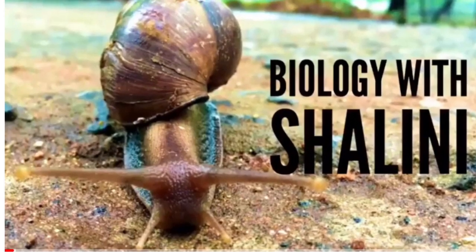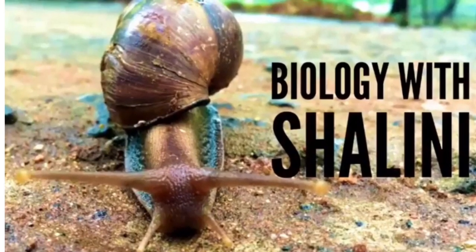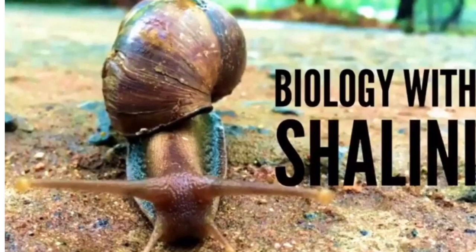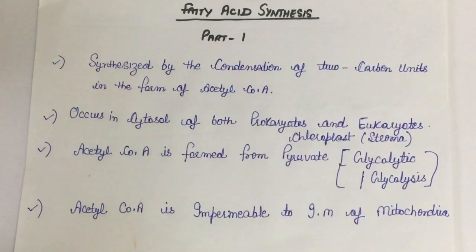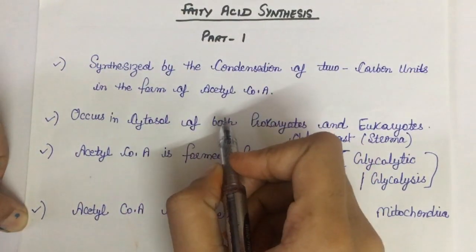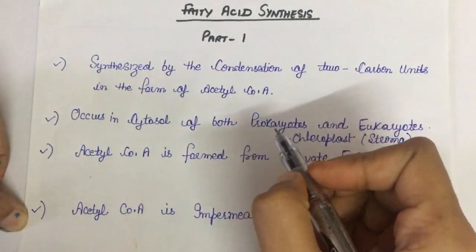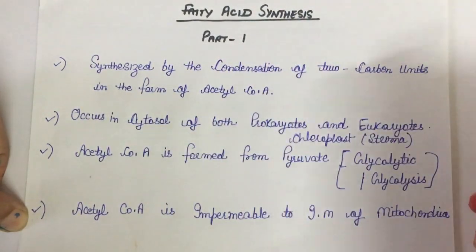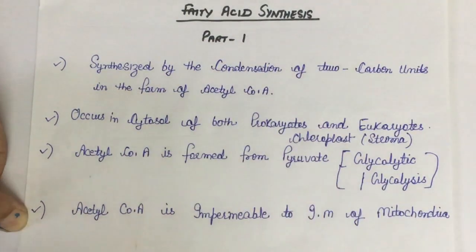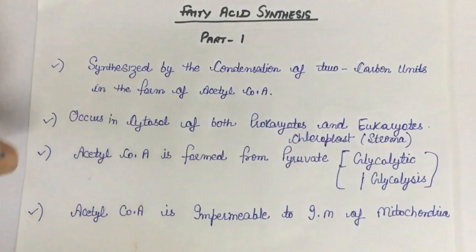Hello everyone, welcome to another tutorial from Biology with Shalini. In this video we are going to talk about fatty acid synthesis part one. Fatty acid consists of a long hydrocarbon chain and a terminal carboxylic group, and they predominantly have even number of carbon atoms.